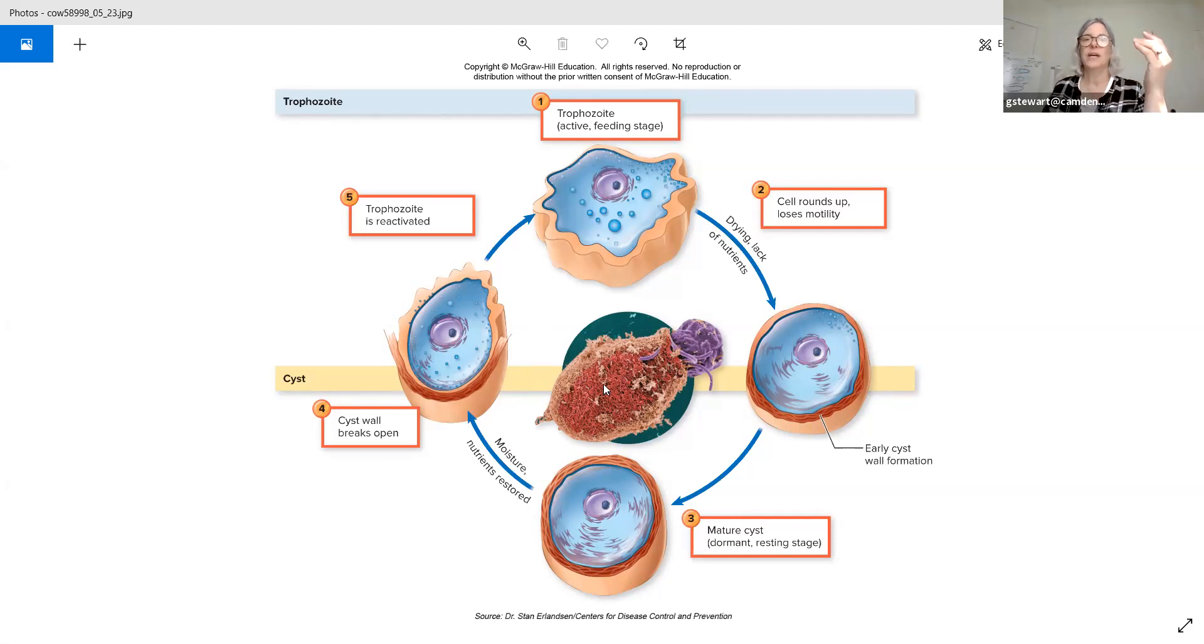This is the cool picture because it's showing the cyst breaking open and the actively growing form coming out again. And this would be like, I drank some pond water and I ingested some cysts. And the organism is now in a wonderful environment in my intestine. And it's saying, let's come out and cause an infection.